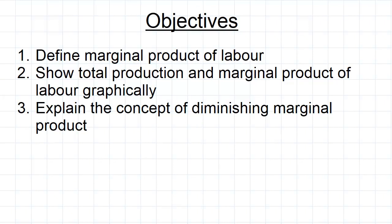In order to see how demand for labour is determined, we need to talk about the effect of additional labour on the level of production of a firm. In this video we're going to define what we call marginal productive labour, then we'll show how we can show both total production and marginal productive labour graphically, and we'll talk about the concept of diminishing marginal product.